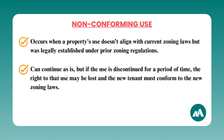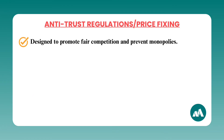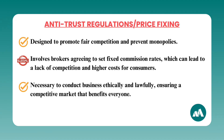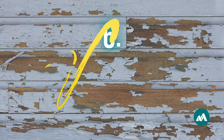Number five: antitrust regulations and price fixing. Antitrust regulations are designed to promote fair competition and prevent monopolies. In real estate, price fixing is one of the most critical violations to avoid — this illegal activity involves brokers agreeing to set fixed commission rates, which can lead to a lack of competition and higher costs for consumers. Understanding these regulations is important to conduct business ethically and lawfully. Make sure to associate the terms price fixing with antitrust regulations and the Sherman Act.